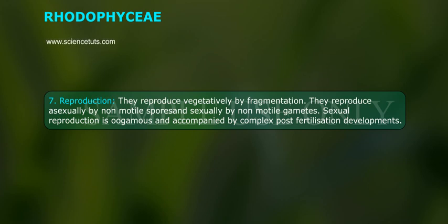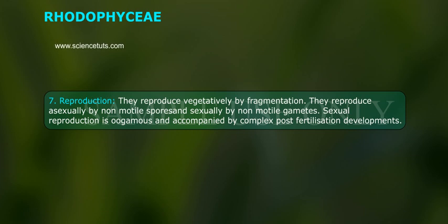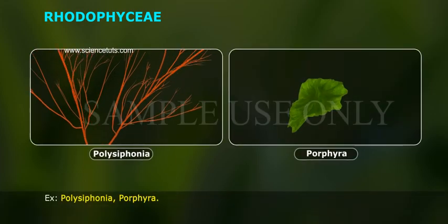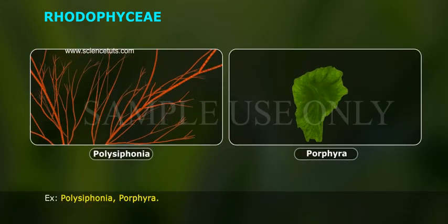Reproduction: They reproduce vegetatively by fragmentation. They reproduce asexually by non-motile gametes. Sexual reproduction is oogamous and accompanied by complex post-fertilization developments. Example: Polysiphonia.